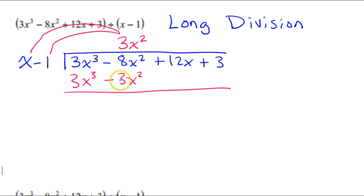So what you do now is you subtract. When you subtract, you just wind up changing the signs is all. So now these are going to cancel out. And I have negative 8x squared and positive 3x squared. So that's going to make negative 5x squared. And I can just bring down these other terms. So bring down the 12x and bring down the positive 3. And then you start over again.